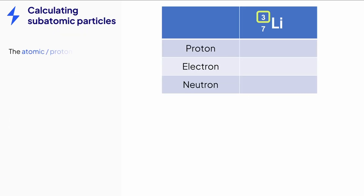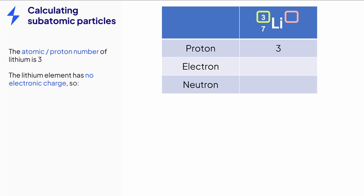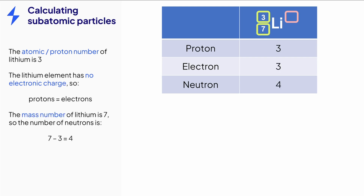The chemical symbol for lithium has an atomic number of three, which means that there are three protons. There is no charge on lithium, which means there are also three electrons. The mass number of lithium is seven, so the number of neutrons is seven minus three, which equals four.